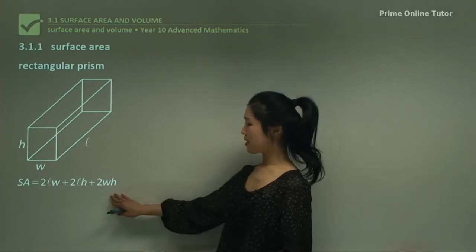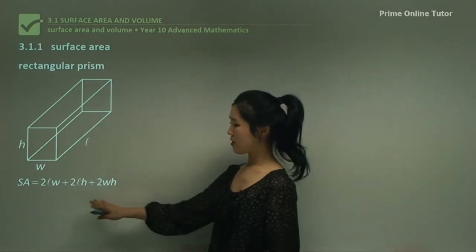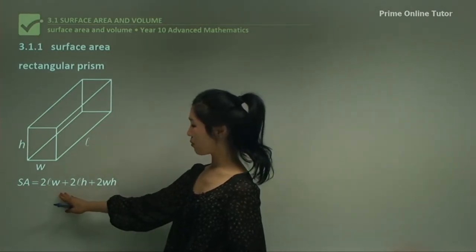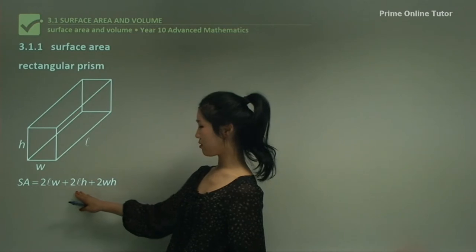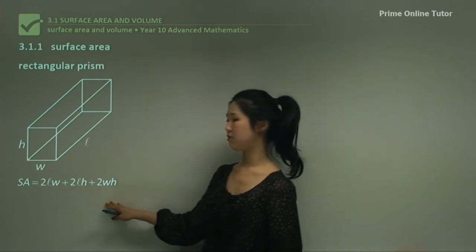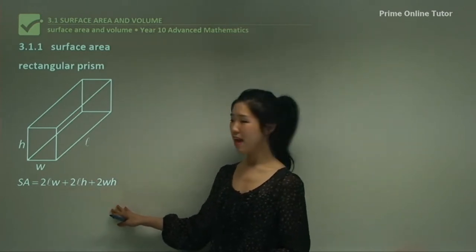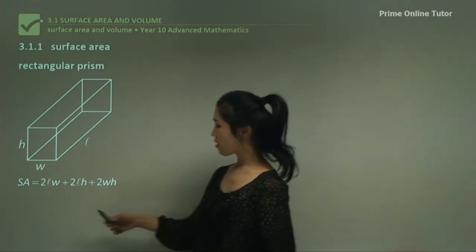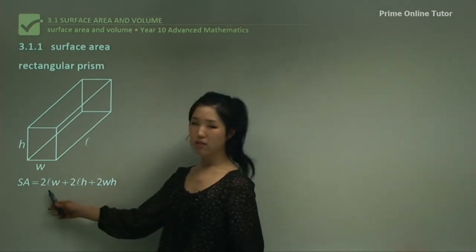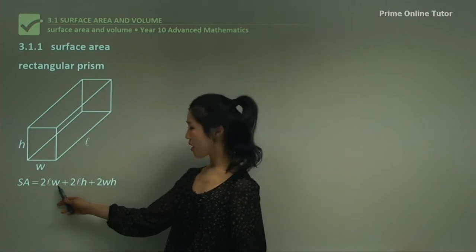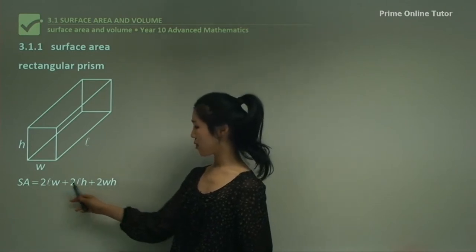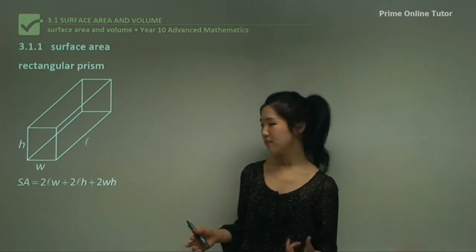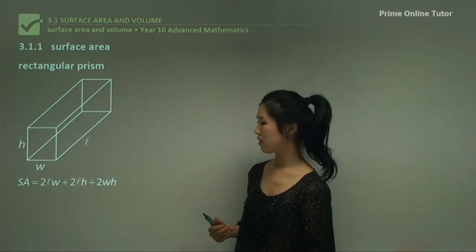This is the formula given to us, where surface area equals 2LW plus 2LH plus 2WH. As you may be aware, L is length, W is width, and H is height. That's what we usually use.